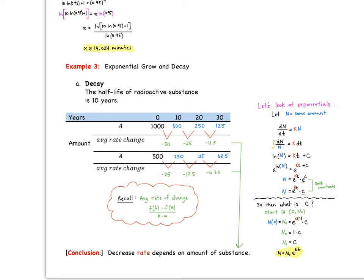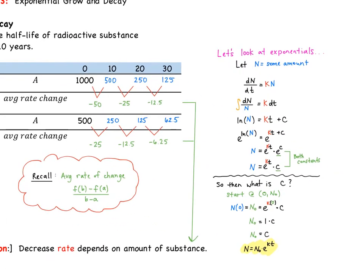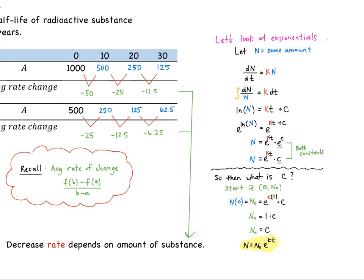Now let's get into some exponentials and kind of see where a formula that you've probably seen multiple times comes from. Let's suppose we get N to be some amount, and then the derivative of that substance is equal to K times N, some constant. So now we need to figure out what is N, what this amount is.